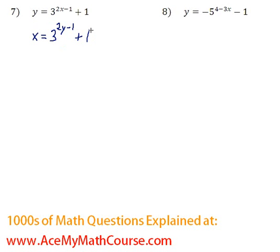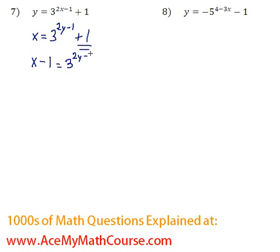I'm going to get started by subtracting 1 from both sides of the equation, so I get x minus 1, to get rid of the plus 1 on this side. So x minus 1 equals 3 to the power of 2y minus 1.